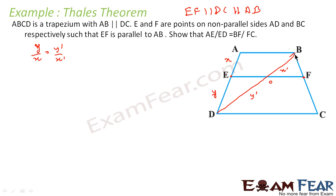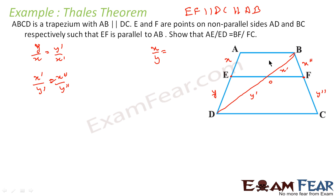In triangle BDC also, OF is parallel to DC — because EF is parallel to DC. Let X double dash and Y double dash be the corresponding segments. So here we can say X dash by Y dash is equal to X double dash by Y double dash — by the same theorem. Why am I doing this? Because I am supposed to prove that AE by ED — that is X by Y — is equal to BF by FC — that is X double dash by Y double dash. So I drew this diagonal line, knowing the theorem applies only for triangles. I found the first equation: Y by X is equal to Y dash by X dash.